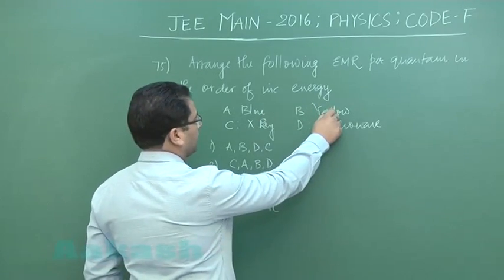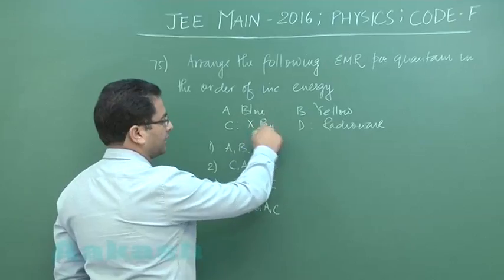So one is blue light, yellow light, X-ray and the radio wave.